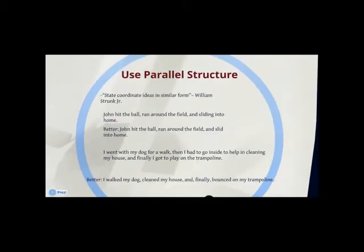William Strunk Jr., a former English professor at Cornell, said writers should state coordinate ideas in similar form. When you make a list, make sure everything in that list is grammatically equivalent. For example, in the sentence: John hit the ball, ran around the field, and sliding at home.